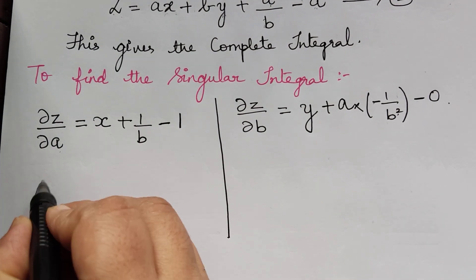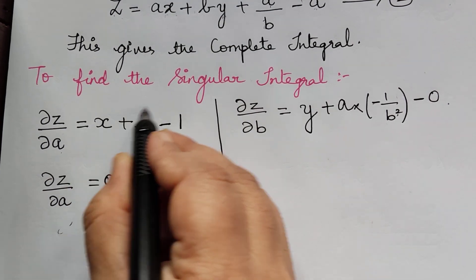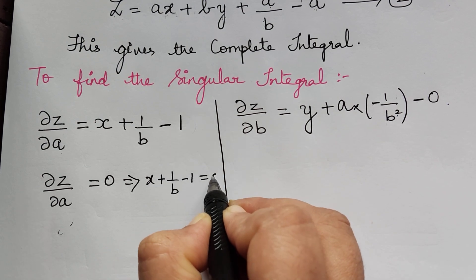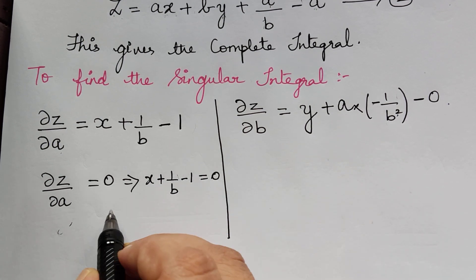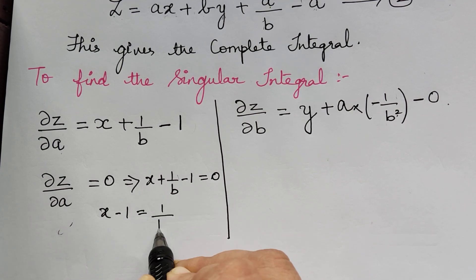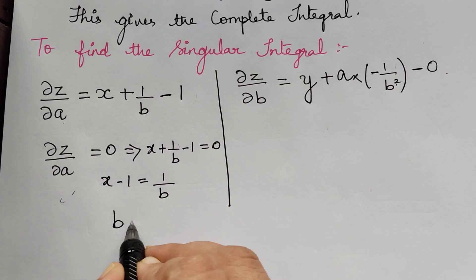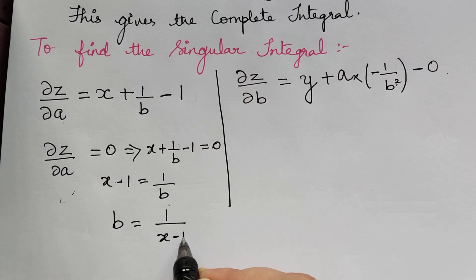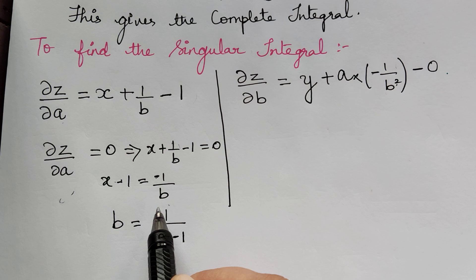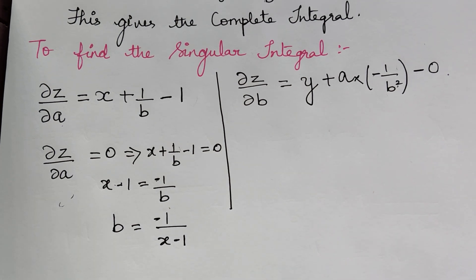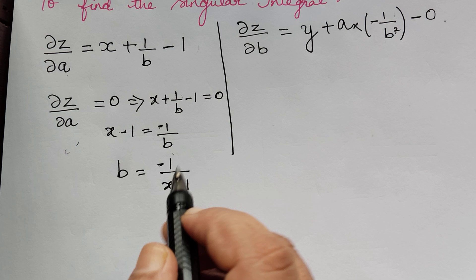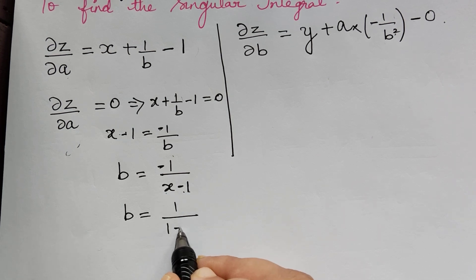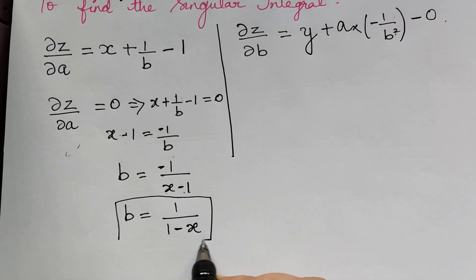Next, we put dou z by dou a equal to 0. So from this, x plus 1 by b minus 1 equals 0. Taking 1 by b to the right, we get x minus 1 equal to negative 1 by b. Therefore, b equals 1 divided by 1 minus x.